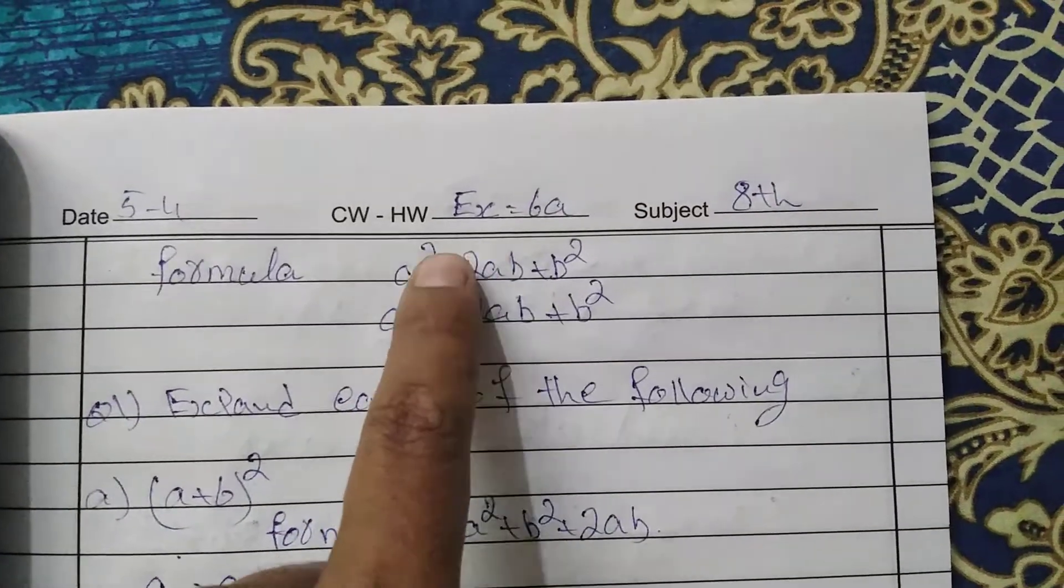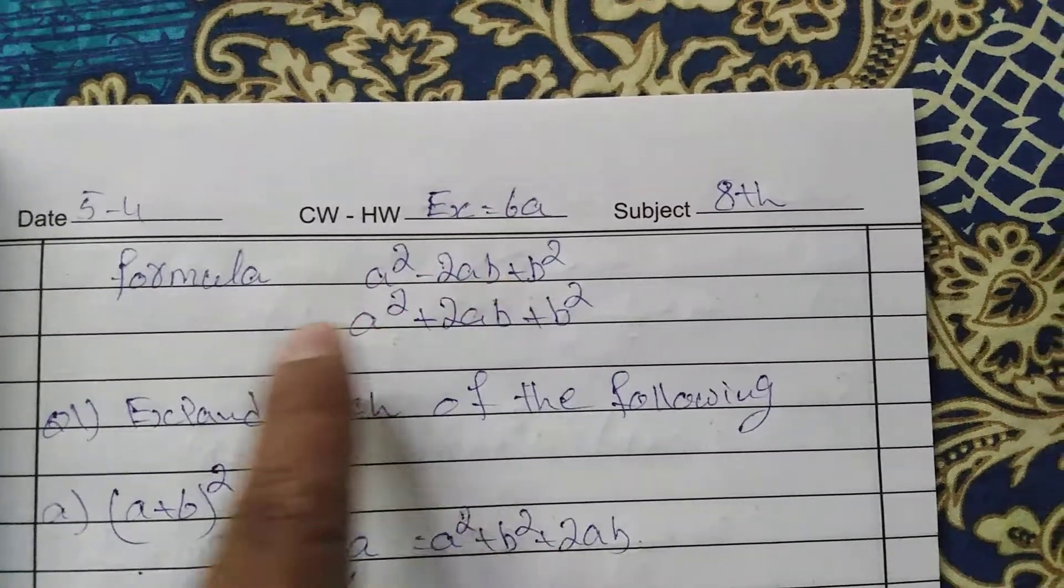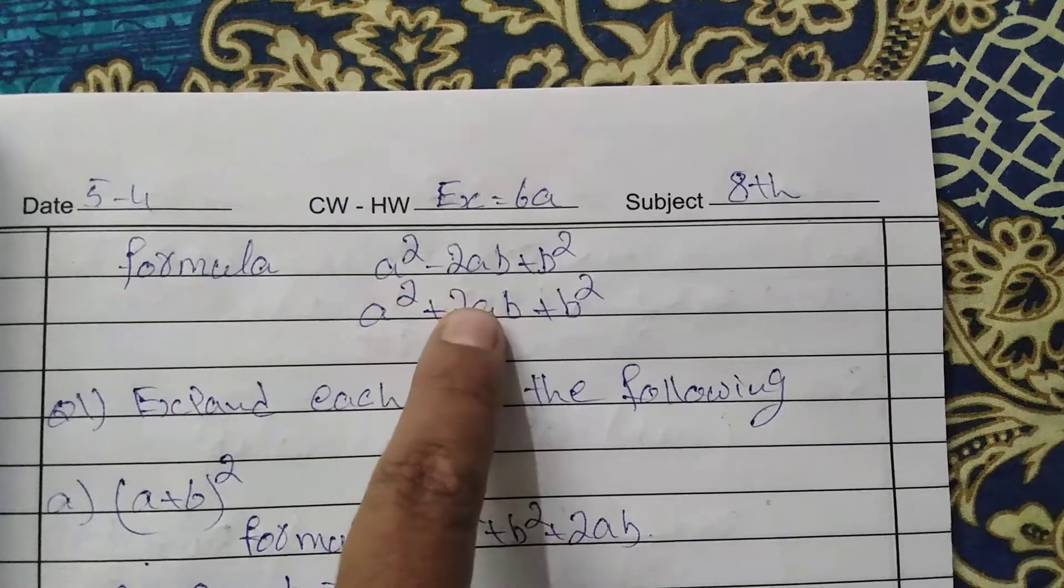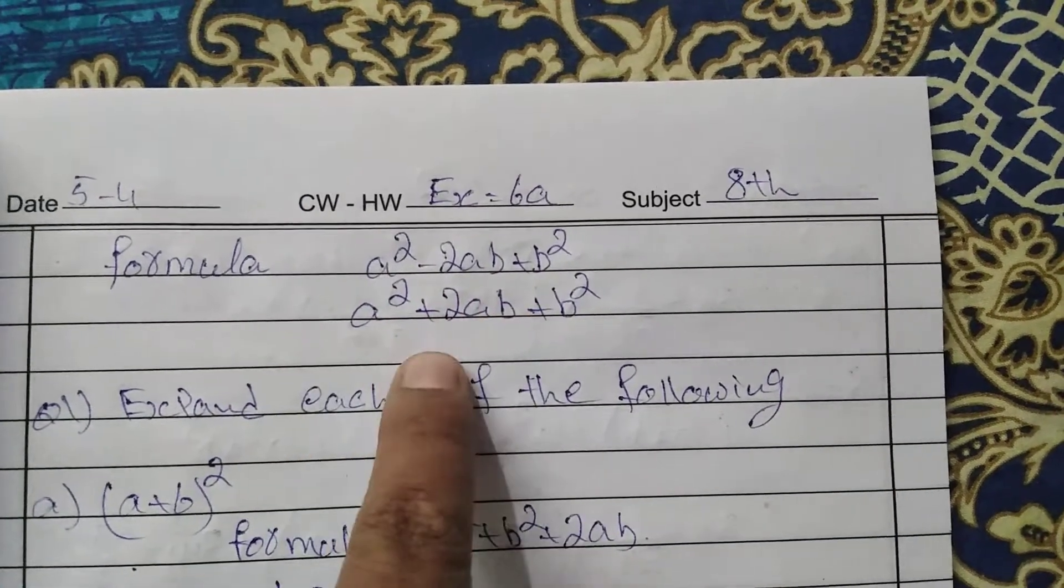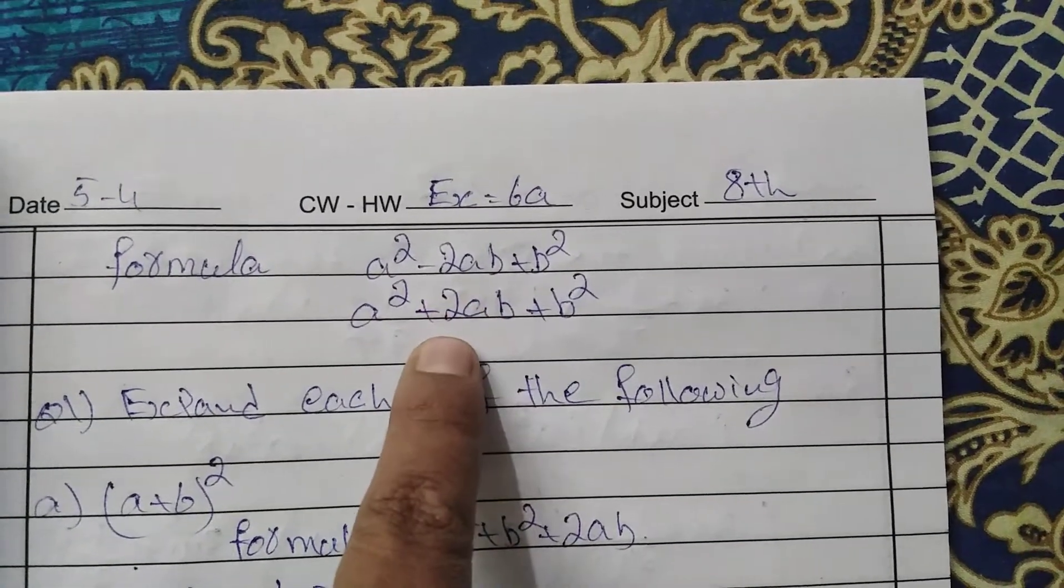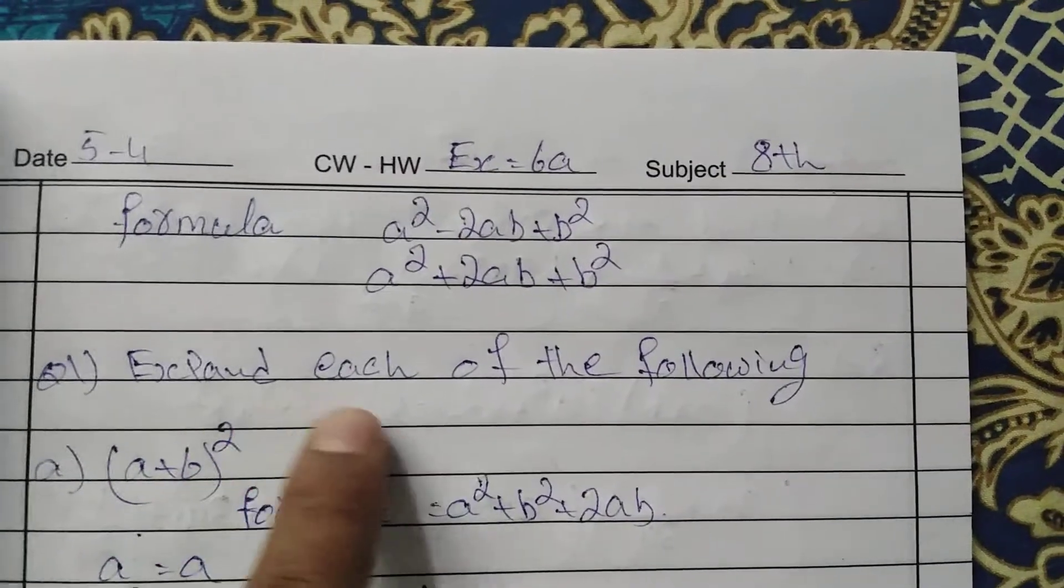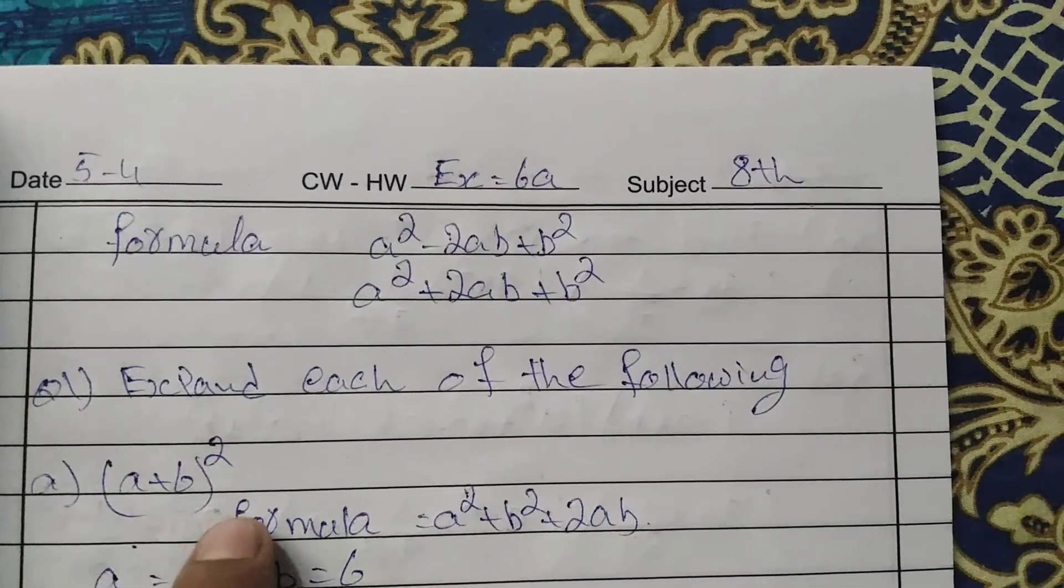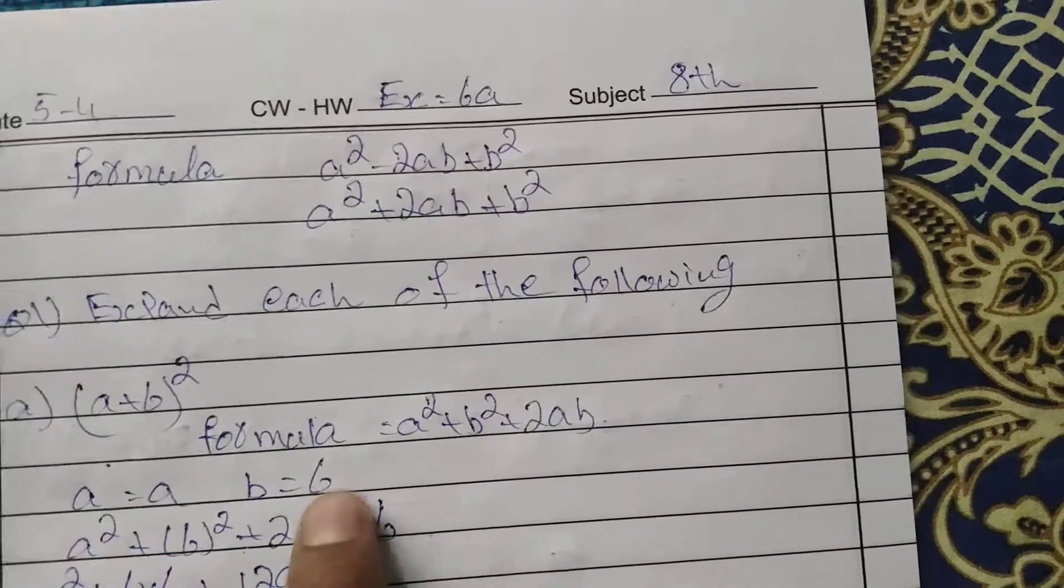Good morning students. Exercise 8.6a. Formula: a² - 2ab + b² and a² + 2ab + b². These two formulas are used in this exercise. Expand each of the following: (a+6)². The formula is a² + b² + 2ab.